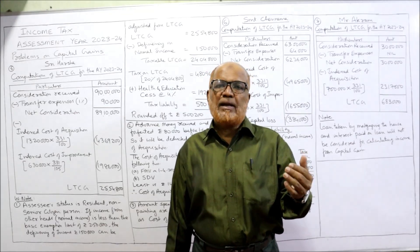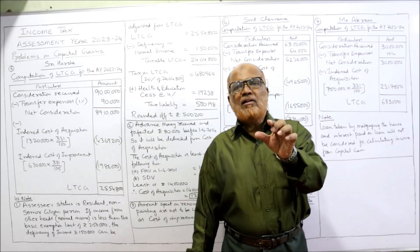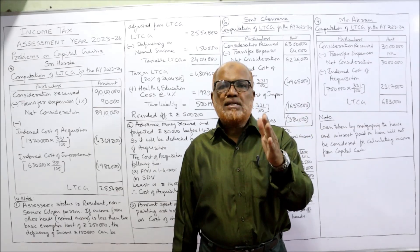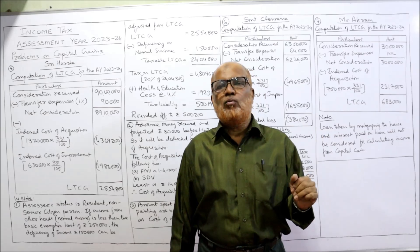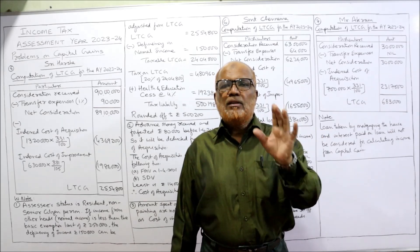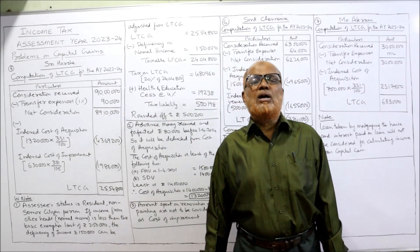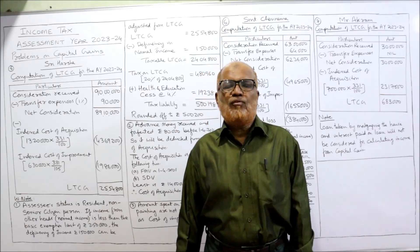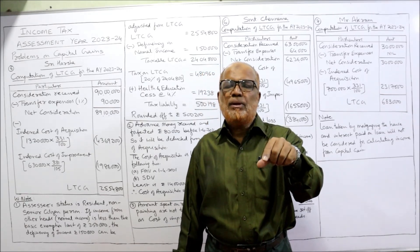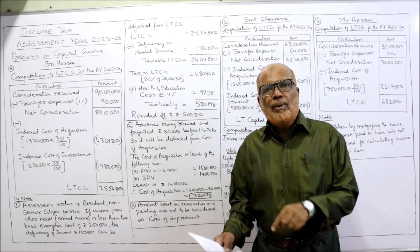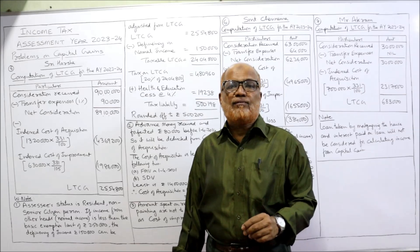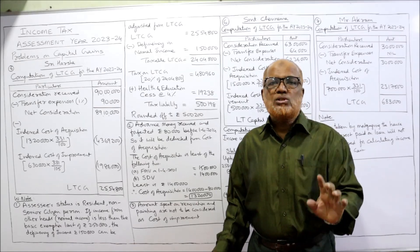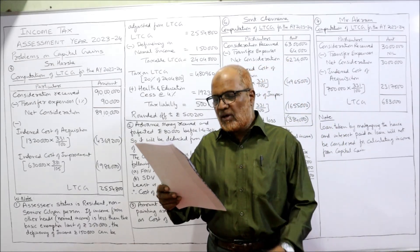The provision of Income Tax Act states: if advance money is forfeited before 1st April 2014, the forfeited amount will be deducted from the cost of acquisition. If the amount is forfeited after 1st April 2014, the amount forfeited is taxable under income from other sources. But here, it was forfeited in 1995 — that means before 1st April 2014 — so this advance of Rs. 80,000 will be deducted from the cost of acquisition.